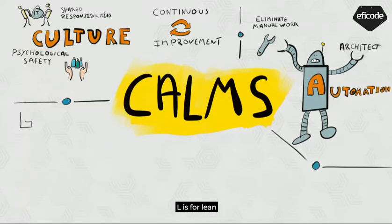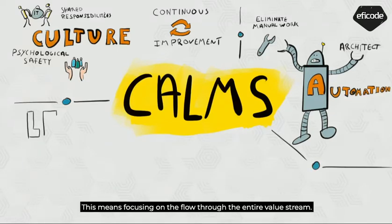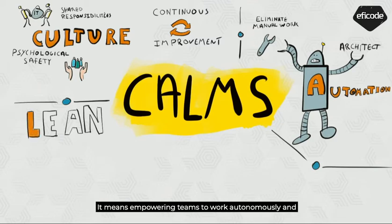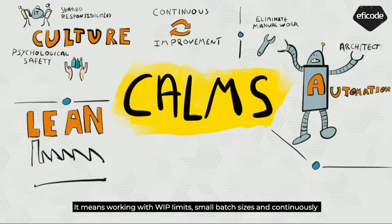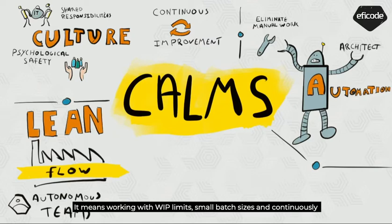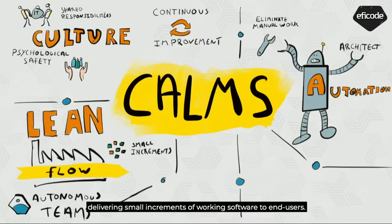The L is for Lean. This means focusing on the flow through the entire value stream. It means empowering teams to work autonomously and independently deliver business value based on user feedback. It means working with WIP limits, small batch sizes, and continuously delivering small increments of working software to end users.